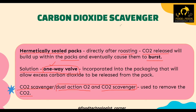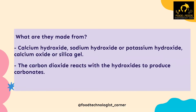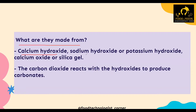Carbon dioxide scavengers are made of calcium hydroxide, sodium hydroxide, potassium hydroxide, calcium oxide, or silica gel. The carbon dioxide reacts with the hydroxide present and forms carbonates. You need to remember these examples as they can be asked in MCQs, particularly in the FSSAI exam.